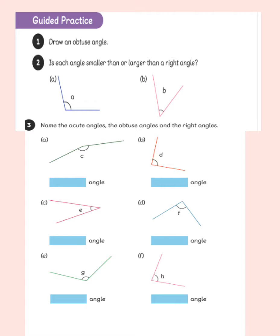We've done number one already. Question two has given us two angles, A and B. One of these angles is smaller than 90 degrees, or a right angle, and one is larger. A is larger than a right angle, so it's an obtuse angle. Therefore we know that B is smaller, so it's an acute angle.